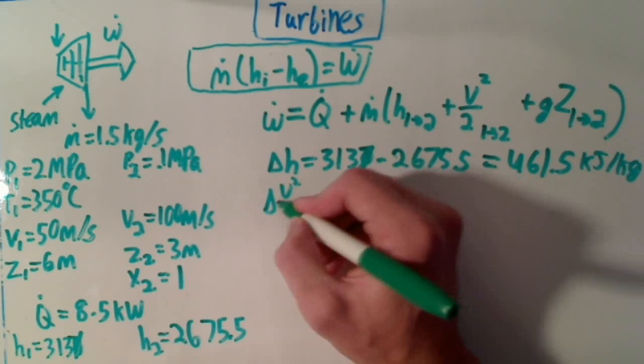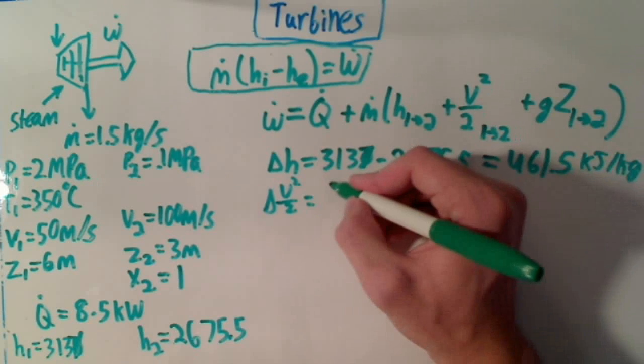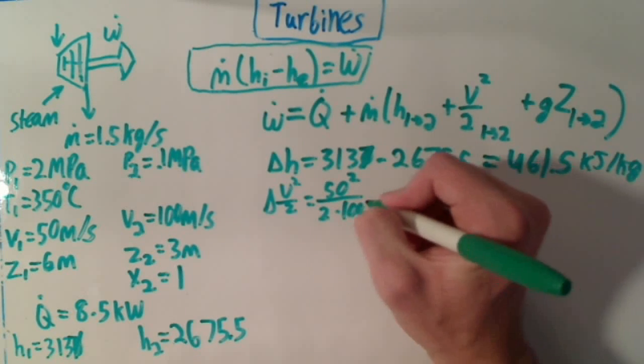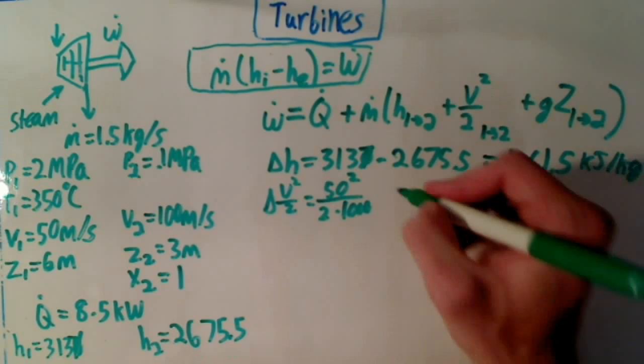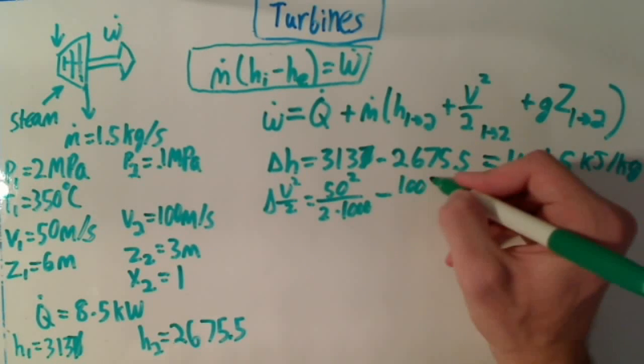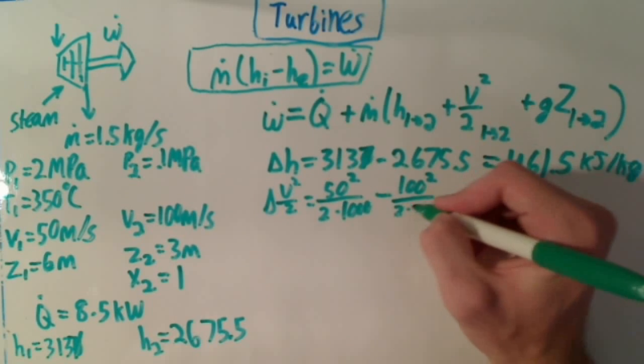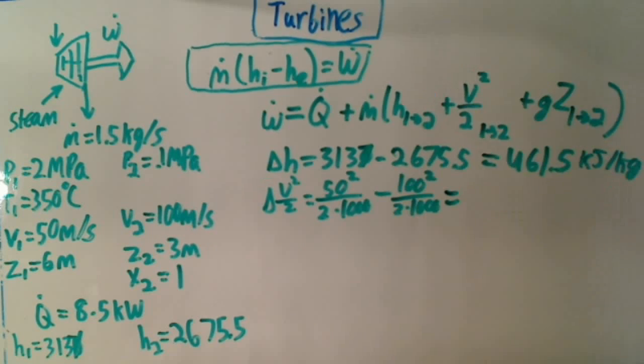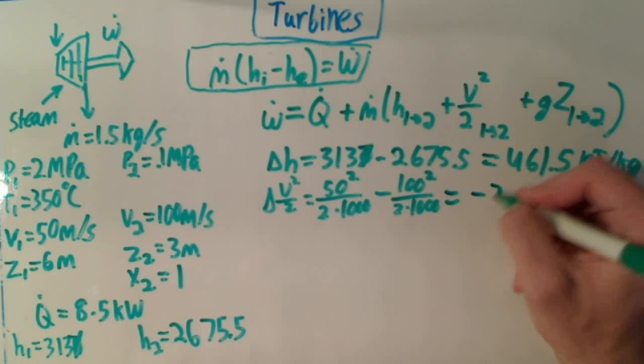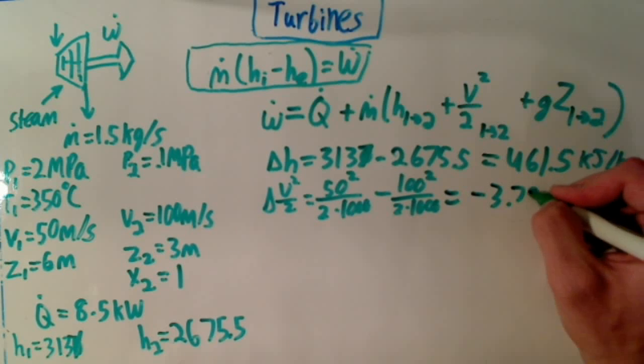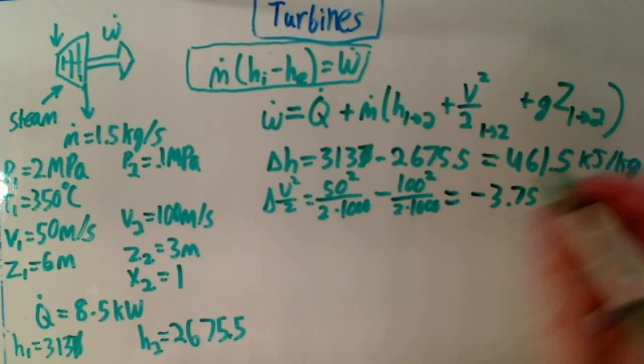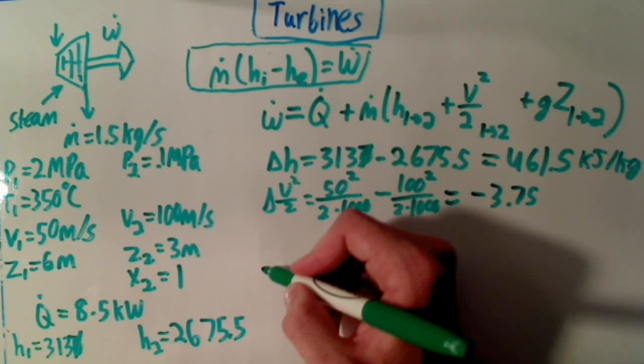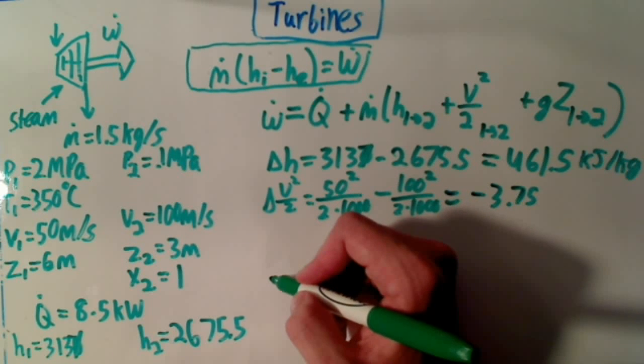Delta V squared over 2 is 50 squared over 2 times 1,000. Don't forget we have to convert to kilojoules. Minus 100 squared over 2 times 1,000. And that equals negative 3.75 kilojoules per kilogram. So this is a negative, a net loss, which is pretty obvious.